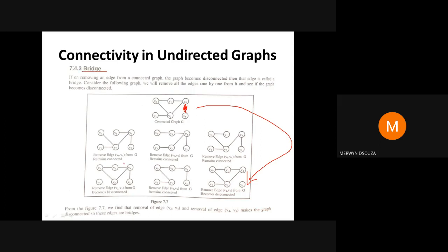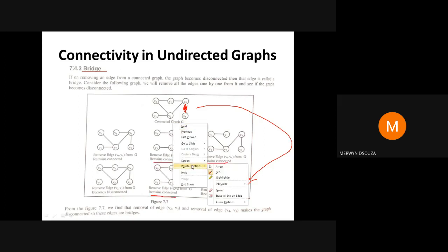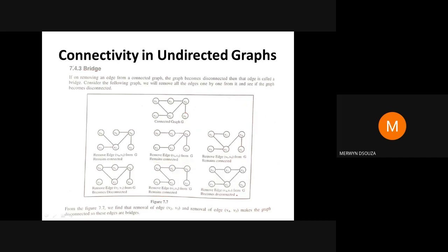Other examples show that if you remove an edge and the graph still remains connected, then that edge is not a bridge. You can go through those examples and check.